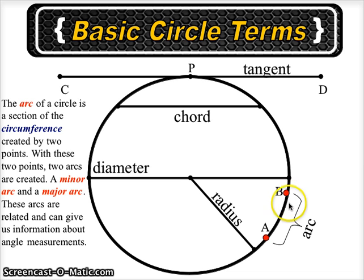An arc of a circle is the section of the circumference created by two points. With these two points, two arcs are created: a minor arc and a major arc. These are related and can give us information about angle measurements for certain lines.